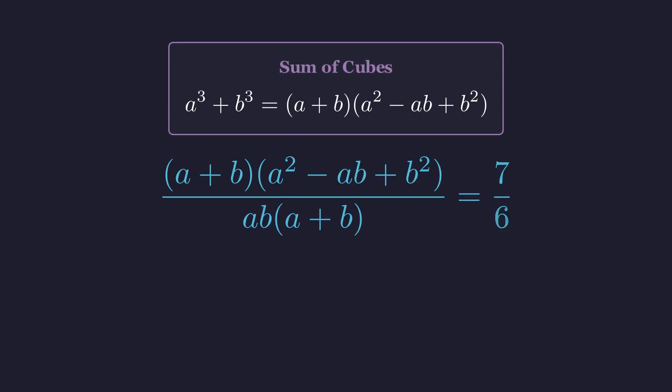Beautiful! After factoring, we can see there's a common factor of (a + b) in both the top and bottom. Since a is positive and b is positive, a + b is never 0 and ab is never 0. No division by 0 issues here. So we can safely cancel that common factor.